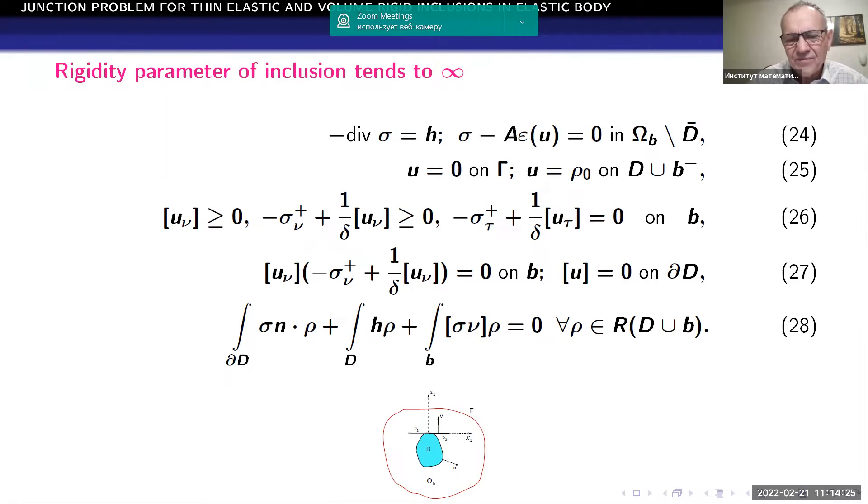In the limit, we obtain the following situation. In fact, we have one rigid inclusion G with the wings B1, B2. And this problem formulation is given with fixed damage parameter delta. So this is justified.